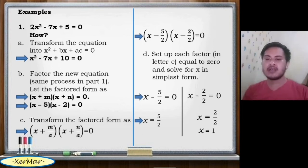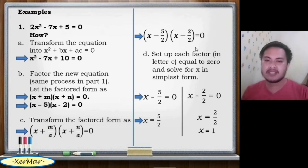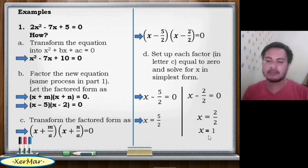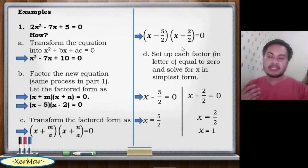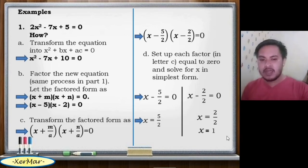Take note, mga ka-learners: from step C, we can directly simplify the higher form of the constant term in each factor. For example, 2/2 simplifies to 1, so we can write x minus 1 equals 0, and the opposite of negative 1 is 1, giving x equals 1. So we can directly simplify the constant term of each factor when it is in higher form.